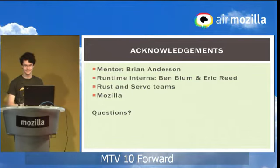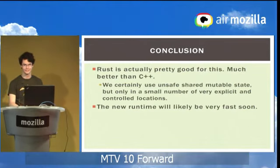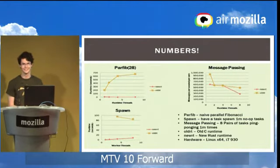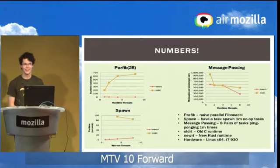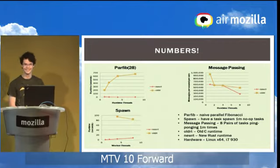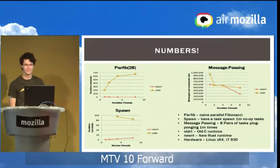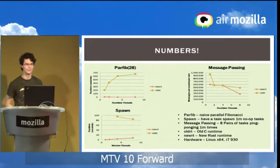Question: you said the old runtime sometimes couldn't complete the spawn benchmark. It would throw an error about running out of memory — something about malloc — and then it would crash. Spawning just isn't very efficient in the old runtime. It's not terrible; as you can see, it wins in message passing performance, but it had its flaws.